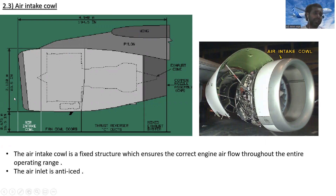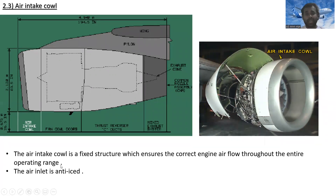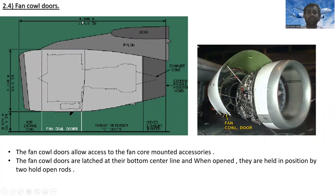The air intake cowl is a fixed structure approximately 2.120 meters in height, which ensures correct engine airflow throughout the entire operating range. The air intake cowl is anti-iced — inside it has a piccolo tube, which will be explained in a later lesson.